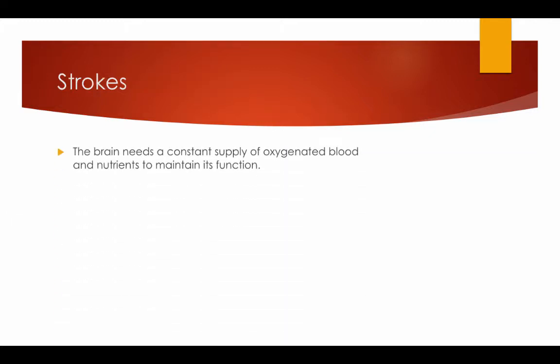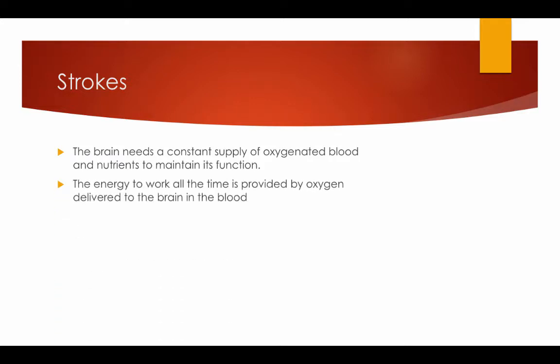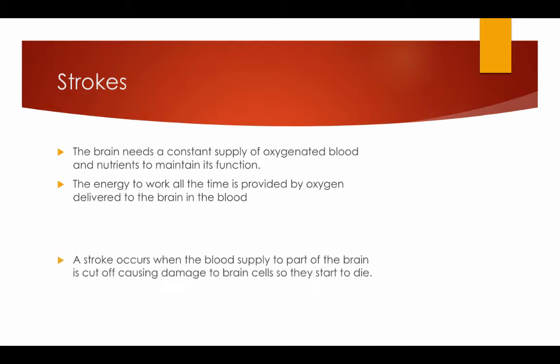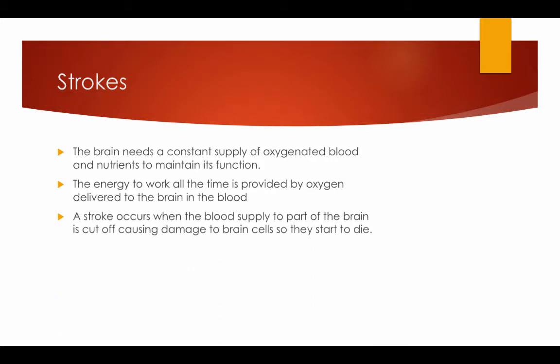The brain needs a constant supply of oxygenated blood and nutrients to maintain its functions. The energy to work all the time is provided by oxygen delivered to the brain in the blood. A stroke occurs when the blood supply to part of the brain is cut off, causing damage to the brain cells so they start to die. This can lead to brain injury, disability, and sometimes death.